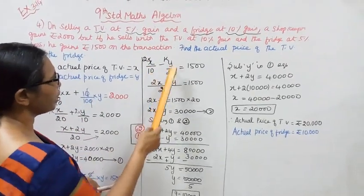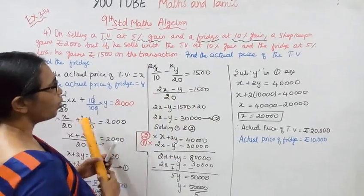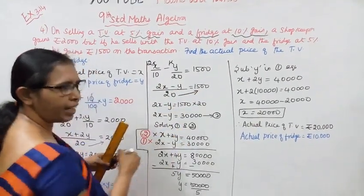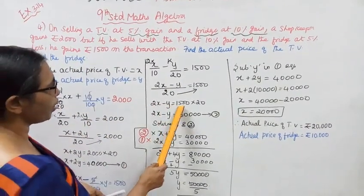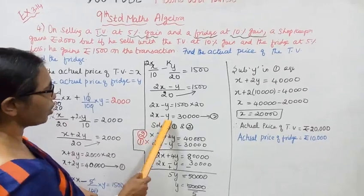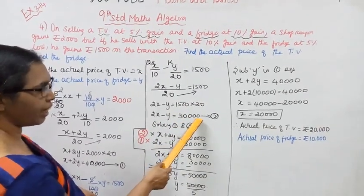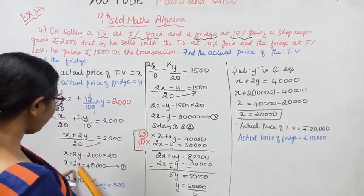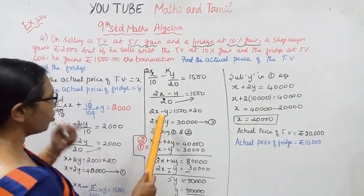So 2X minus Y equals 1500 into 20. Multiplying through, 2X minus Y equals 30,000. This is the second equation.